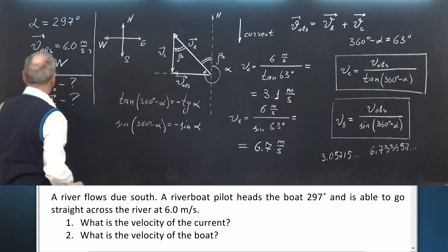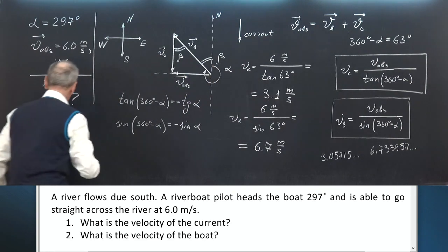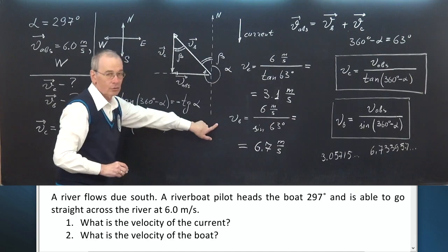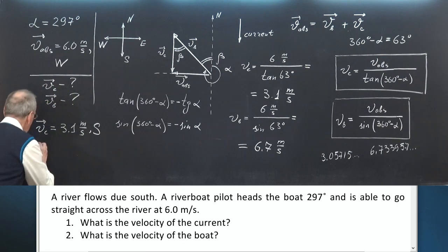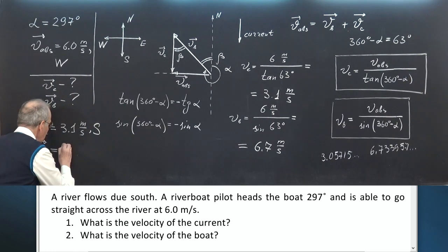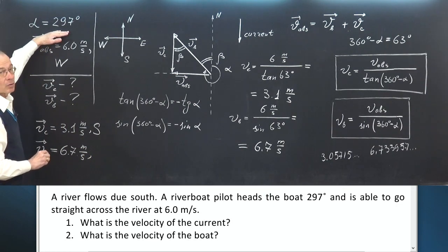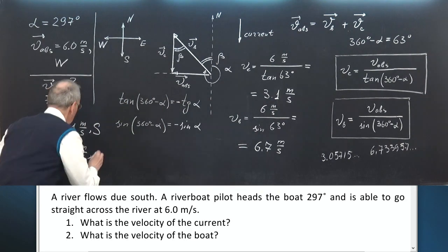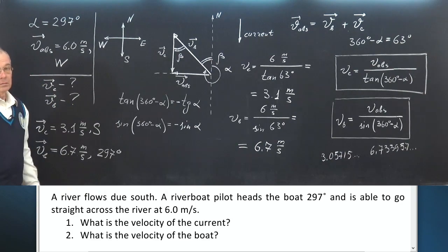The answer is: V_current equals 3.1 meters per second to the south. V_boat vector equals 6.7 meters per second, and its direction is on bearing — azimuth alpha — 297 degrees. The problem is solved.